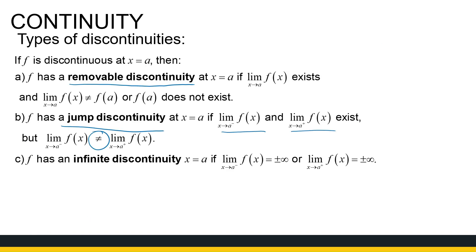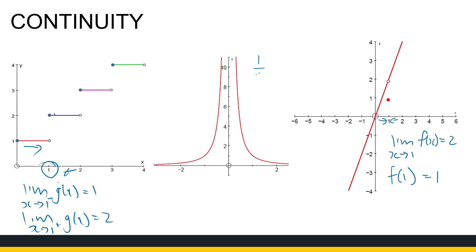The third type is an infinite discontinuity, where one or both one-sided limits tend to positive or negative infinity, so the limit doesn't exist. For example, 1 over x squared: as x approaches 0 from either side, the function value goes to positive infinity, so the limit doesn't exist — it goes off to infinity — and therefore it's an infinite discontinuity. In the next video we'll look at more examples of testing continuity and the types of discontinuities.